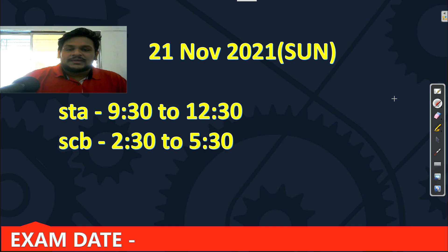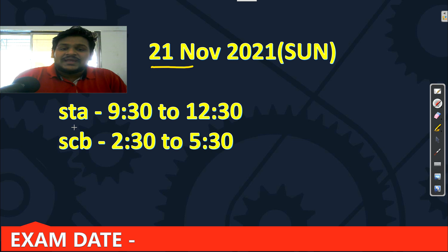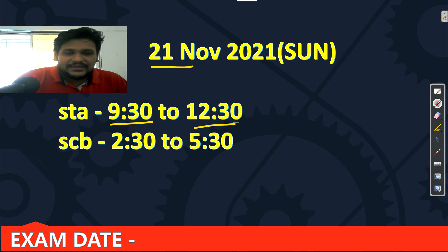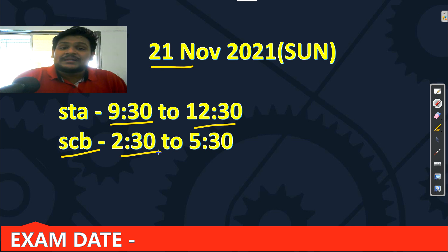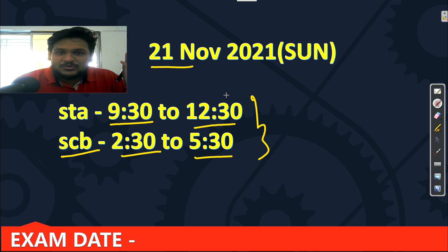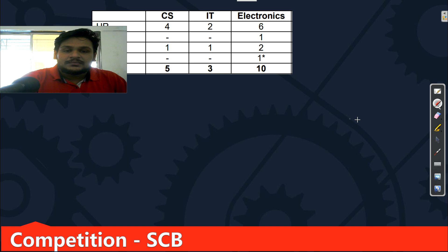Your exam date is 21st November, which is a Sunday. For SDA, your paper will be from 9:30 AM and it is 3 hours long. For Scientist B, your paper will be from 2:30 PM to 5:30 PM. Those who filled both forms will have both papers on the same day.